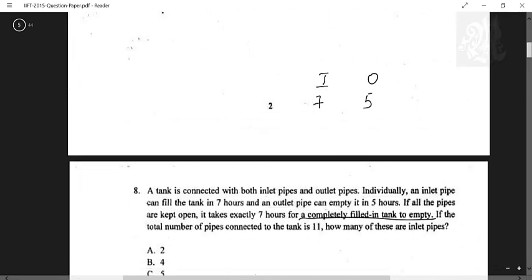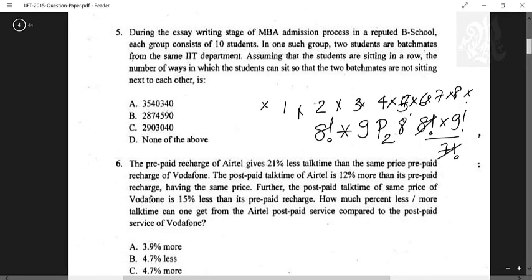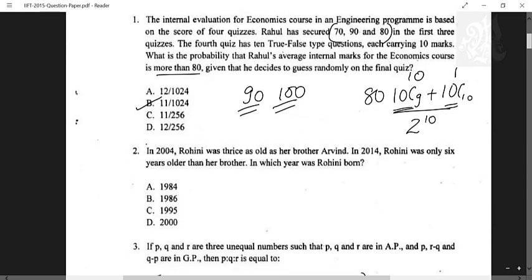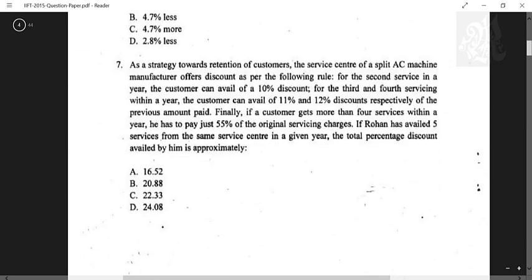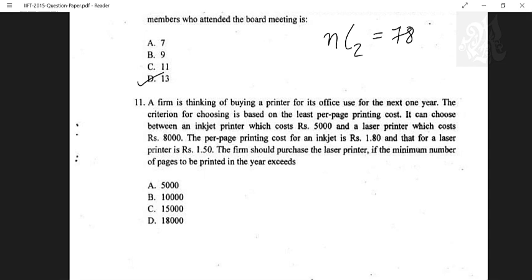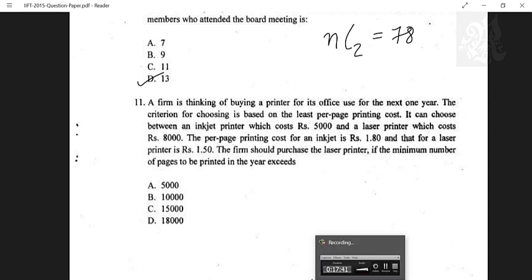We've solved roughly 10 questions accurately. The first round took about 3.5 minutes and the second round about 10 minutes — 15 minutes total. You can spend more time solving additional questions, but this approach will easily clear the section cutoff. I'll keep updating more videos before CAT about overall mock strategy, LRDI, and verbal too. Thank you very much!